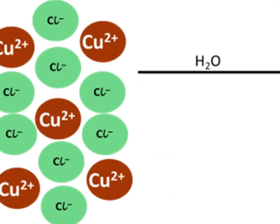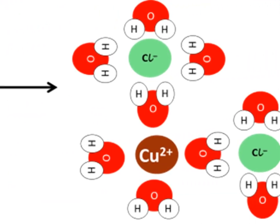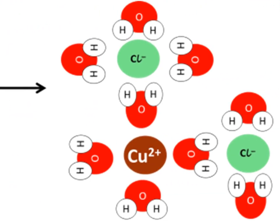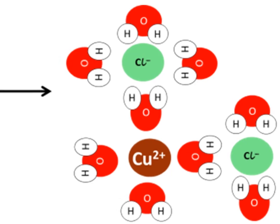When this dissolves, water pulls apart the crystal and surrounds each ion. Now the ions are free to move because they are no longer held rigidly in place by ionic bonds in the crystal lattice. That's why a copper chloride solution can conduct electricity, so it can serve as an electrolyte.